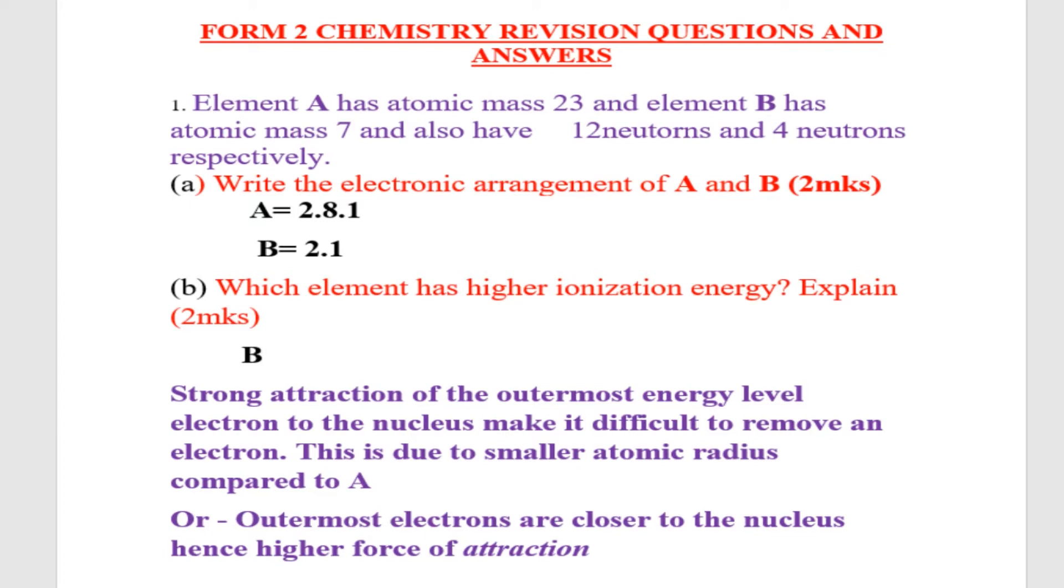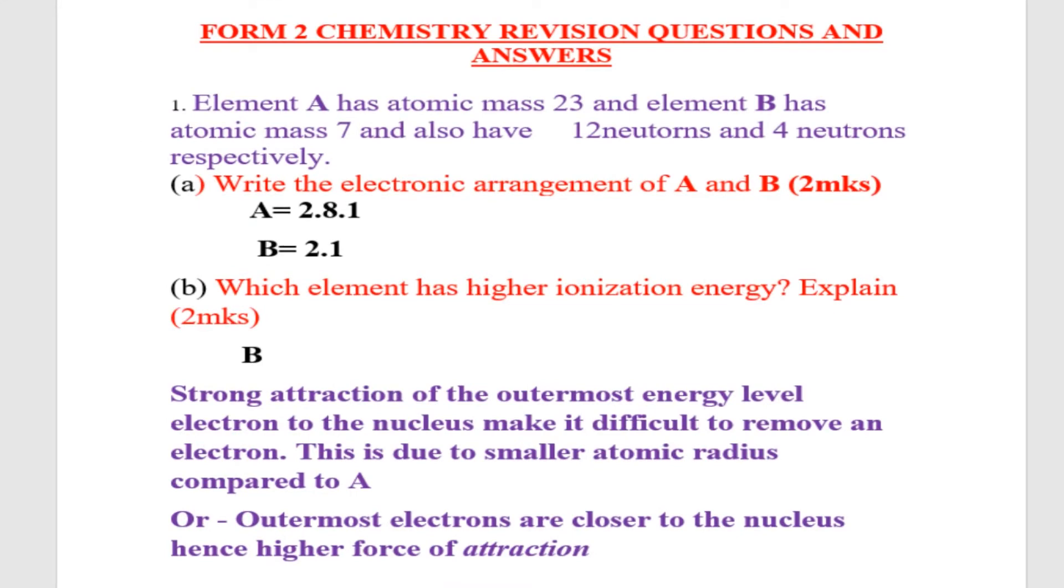B has smaller atomic radius compared to A. This is due to the smaller atomic radius, therefore it is difficult to remove the electron.